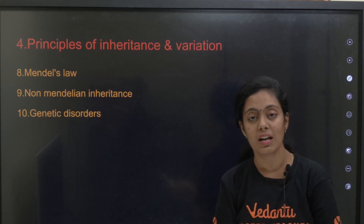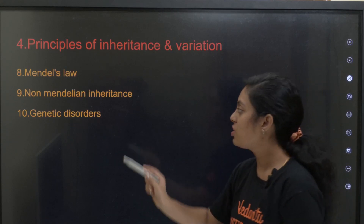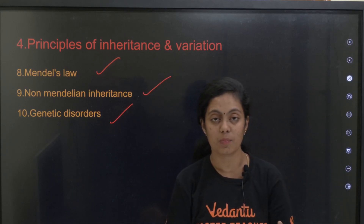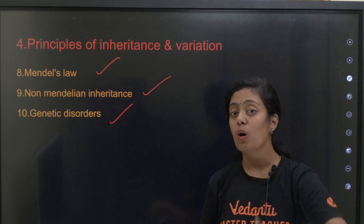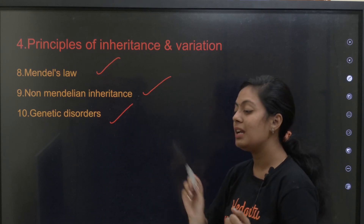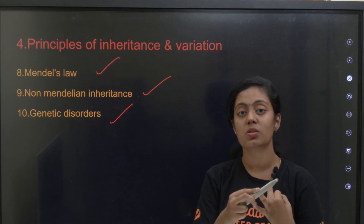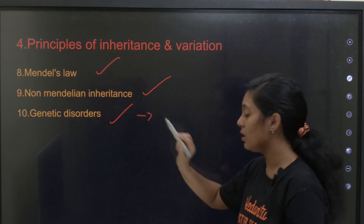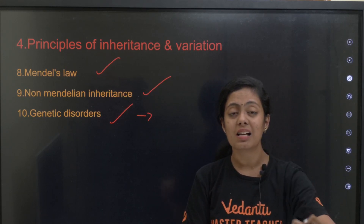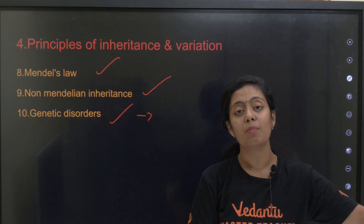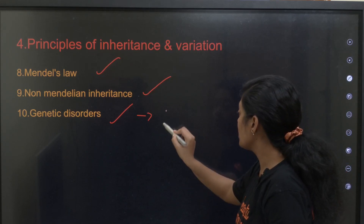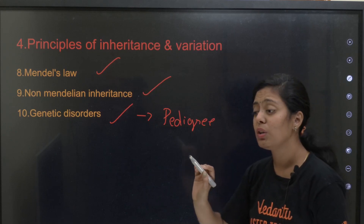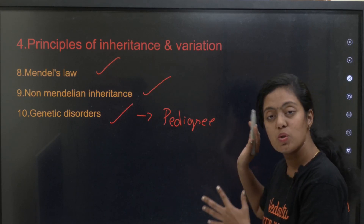Next is principles of inheritance and variation — a very high weightage chapter. Topics include Mendel's laws, non-Mendelian inheritance, and genetic disorders. Under Mendel's laws: basic terminologies, law of dominance, law of segregation, law of independent assortment. Non-Mendelian inheritance includes incomplete dominance, co-dominance, multiple allelism, and pleiotropy. Genetic disorders — study sickle cell anemia, phenylketonuria, color blindness, and sex-linked disorders along with chromosomal abnormalities and pedigree analysis. Expect many application-based questions.